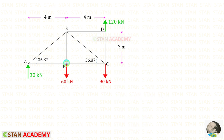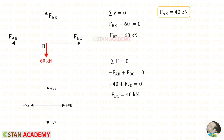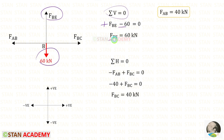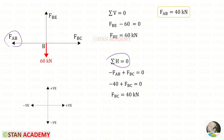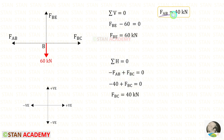Now let us take joint B. Applying sigma V = 0: one force acts upwards (positive) and one downwards (negative). For FBE we get 60 kN. Applying sigma H = 0: FAB acts towards the left so negative, FBC acts towards the right so positive. Substituting FAB = 40, for FBC we get 40 kN.